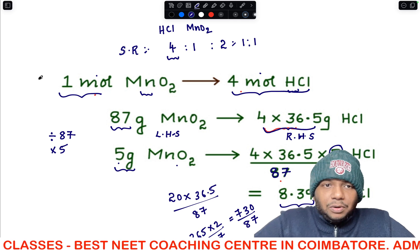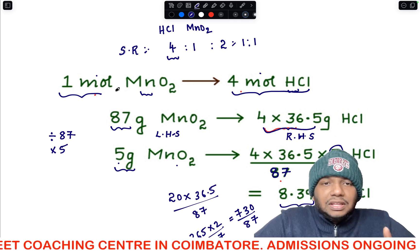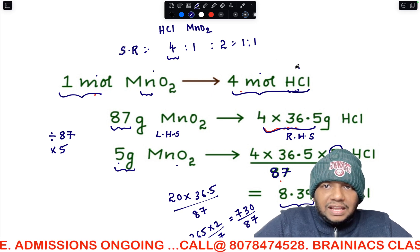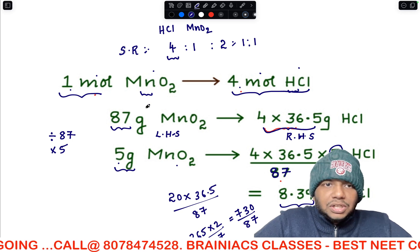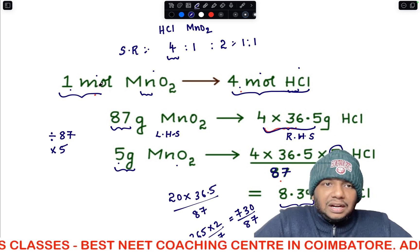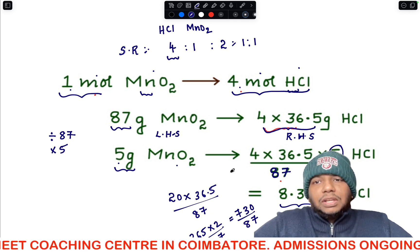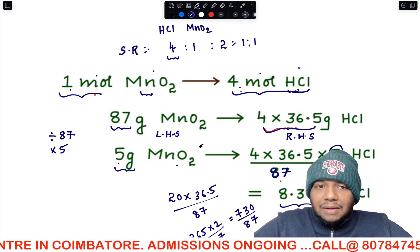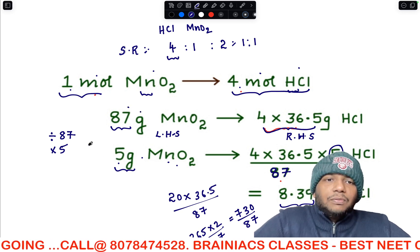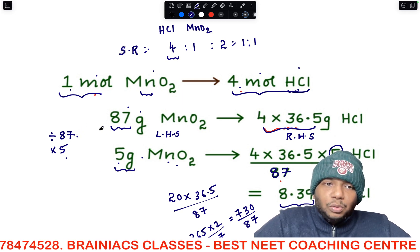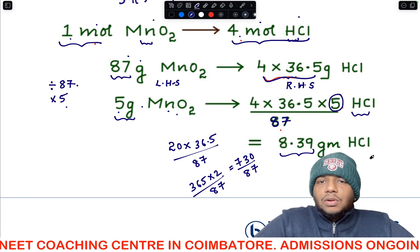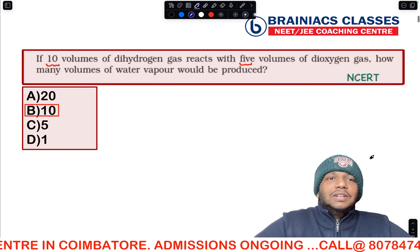To recap: first, balance the equation; second, identify which terms to relate — here it is MnO₂ and HCl; third, from stoichiometry write that 1 mol MnO₂ requires 4 mol HCl; fourth, convert to grams; fifth, since the question gives 5 g MnO₂, divide by 87 and multiply by 5 on both sides to get the required amount of HCl. The answer is 8.4 g.